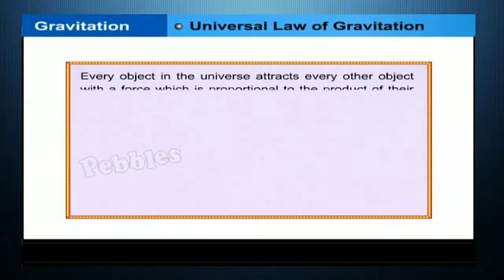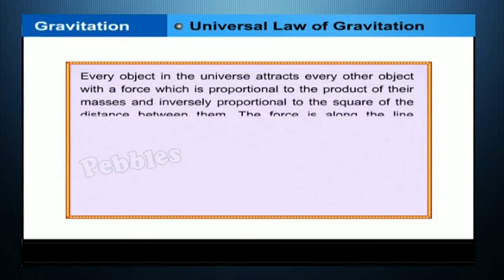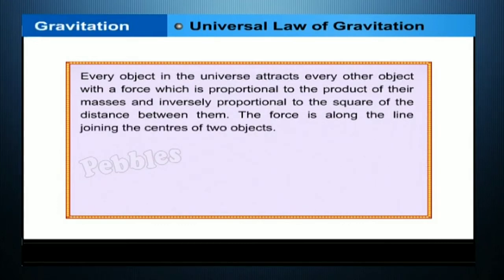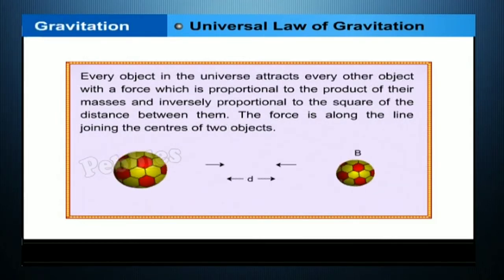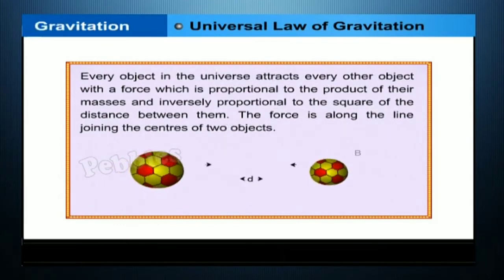Universal law of gravitation: every object in the universe attracts every other object with a force which is proportional to the product of their masses and inversely proportional to the square of the distance between them. The force is along the line joining the centers of the two objects. Let two objects A and B of masses M and m lie at a distance d from each other.